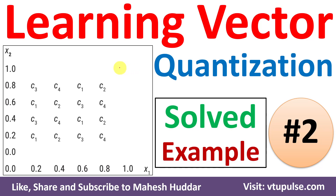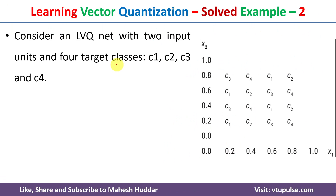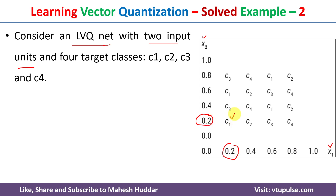Welcome back. In this video I will discuss Learning Vector Quantization with the help of a solved example — this is solved example number 2. A link for other examples is given in the description below. We have been given a Learning Vector Quantization net with two input units and four target classes: c1, c2, c3, and c4. x1 and x2 are the input units. For example, if x1 is 0.2 and x2 is 0.2, the data point belongs to c1.